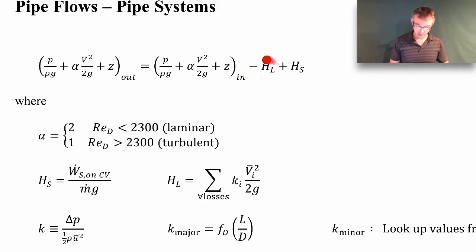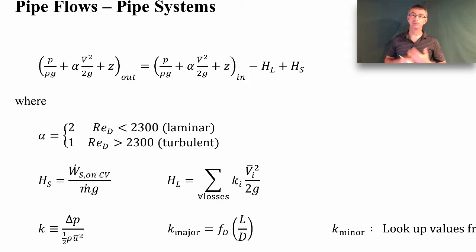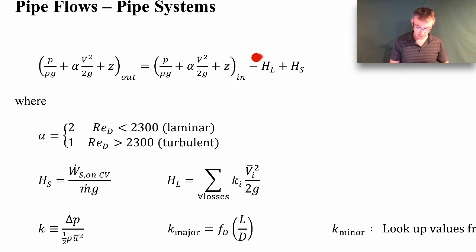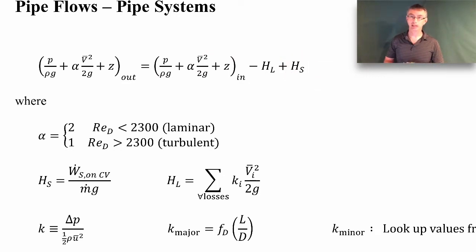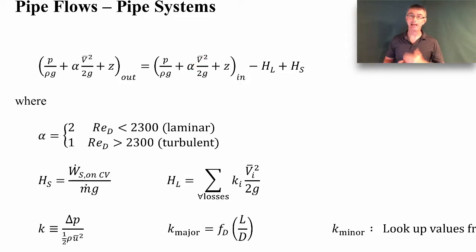Here's the loss of energy due to head losses — these are basically viscous losses. Viscous losses in straight sections of pipe are known as major losses, and viscous losses in devices are known as minor losses. Maybe we add some energy because of a pump, or we extract some energy due to a turbine. If we extract energy, the HS term would be negative — it's called the shaft head term. The V here is a V-bar, meaning an average velocity at the pipe inlet and pipe outlet.